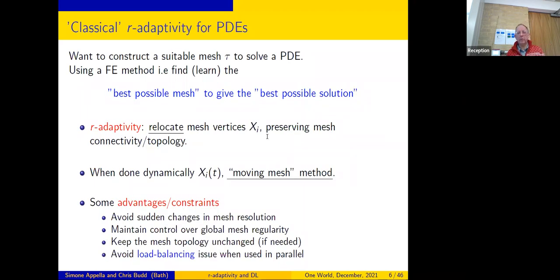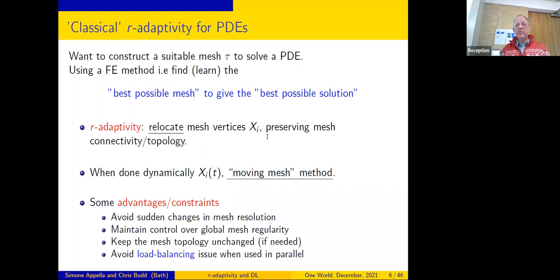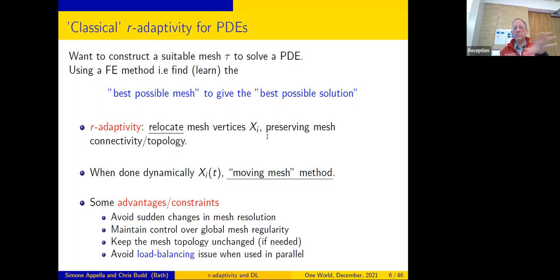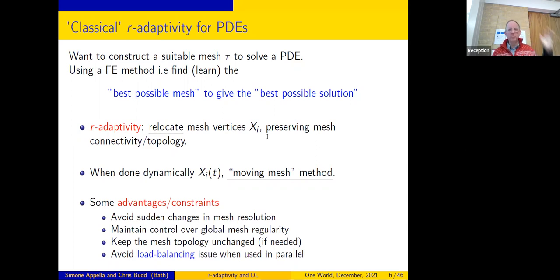PINNs have been published on extensively since the original papers, with some showing very good performance and others showing poor performance — it's not clear when they work well. A key question I asked myself: PINNs are advertised as mesh-free but still have collocation points. Can the performance of a PINN be improved by a good choice of those points?